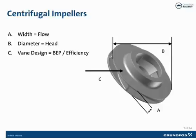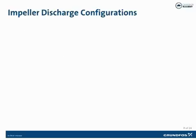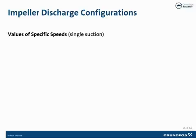Over the years, pump designers have tabulated volumes of performance data based on these and other design components. This information is often associated with a term called specific speed. The term specific speed is often misunderstood — when we hear it, we naturally think of impeller rotational speed or velocity. In reality, it is a number used to categorize the performance of impeller designs based on design experience.